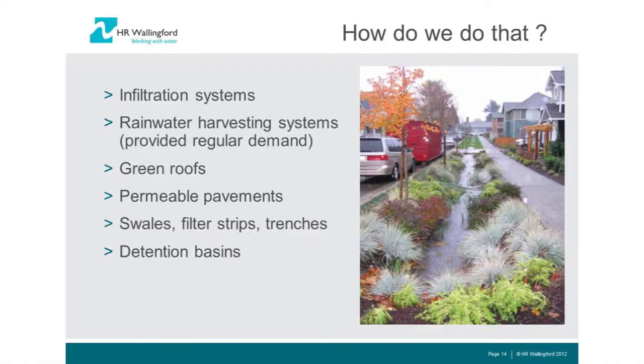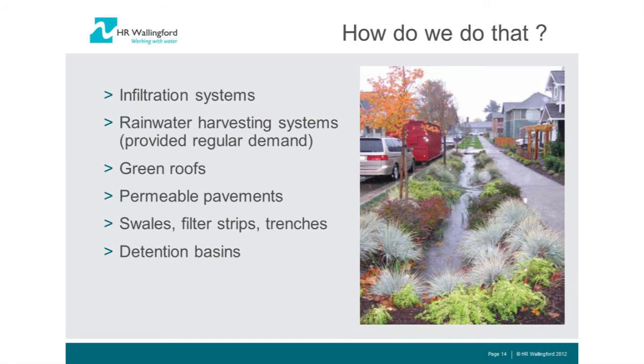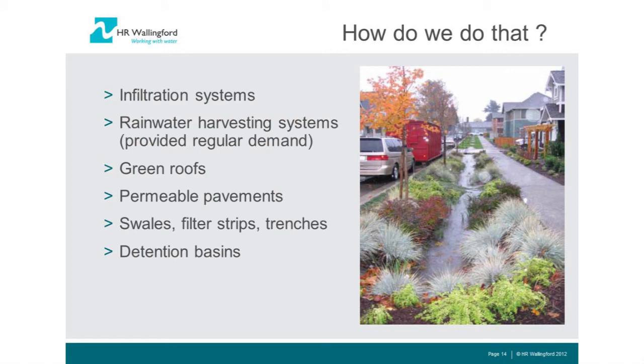How can we design systems so the site does not deliver runoff for small rainfall events? Infiltration systems — which you would ideally have prioritized anyway — can manage well in excess of 5mm. Rainwater harvesting systems work if there's guaranteed regular demand. Green roofs will handle 5mm without problem. Permeable pavements, even if lined, generally don't produce runoff at that event size. Swales, trenches with engineered soils, and detention basins all achieve this — but not a pipe and tank.